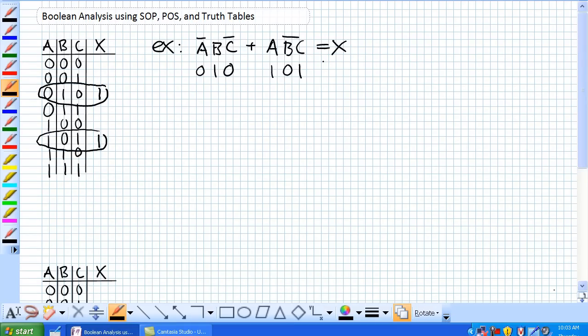There we go, there's only two possible combinations that are going to give us a 1. The rest of them are 0's. Basically we've just used the sum of products expression to create a truth table.